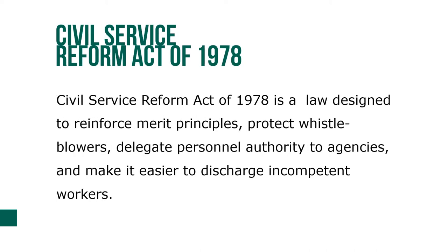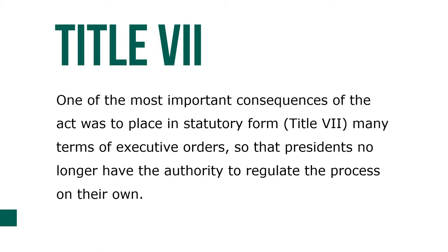The Civil Service Reform Act of 1978 was a law designed to reinforce merit principles, protect whistleblowers, delegate personnel authority to agencies, and make it easier to discharge incompetent workers. It created the Federal Labor Relations Authority, or FLRA, the Office of Personnel Management, OPM, Senior Executive Service, SES, and the Merit Systems Protection Board, MSPB. One of the most important consequences of the act was to place in statutory form — Title 7 — many of the terms of executive orders, so that presidents no longer had the authority to regulate the process on their own.